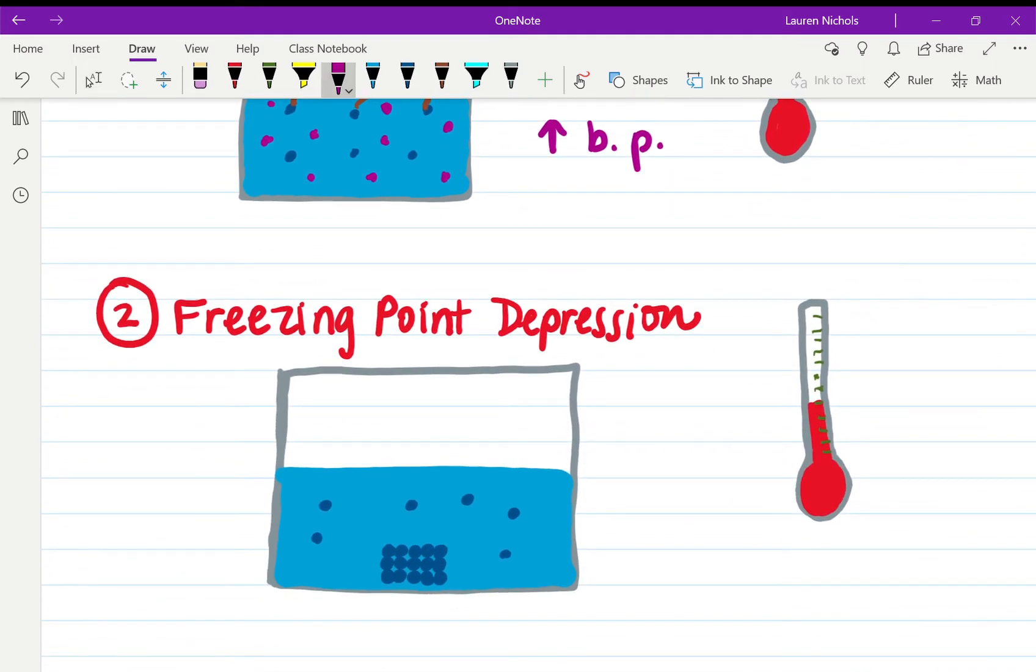That is boiling point elevation—just that adding solute increases boiling point. Now by the opposite measure, adding a solute with freezing point depression. So adding a solute is going to decrease your freezing point, which sounds different. But keep in mind that in order for a solid to freeze, we have some water molecules that are already starting to freeze and become solid, and we've got these blue ones here that are liquid.